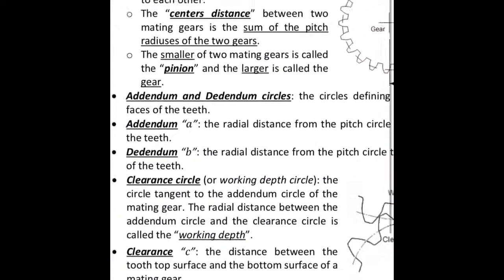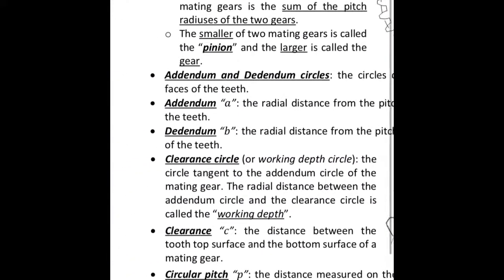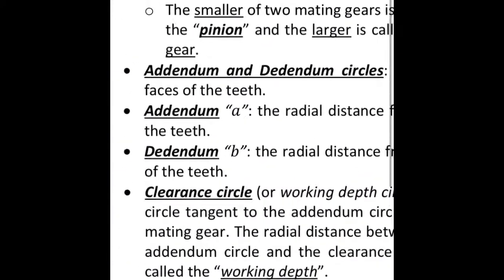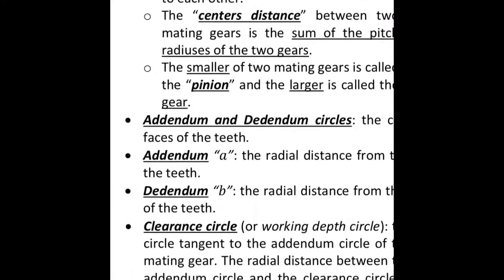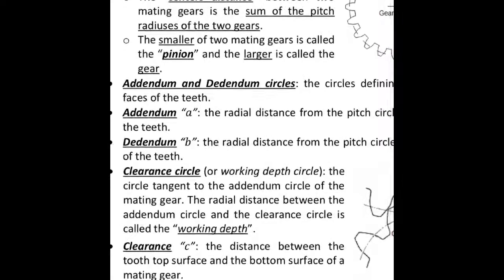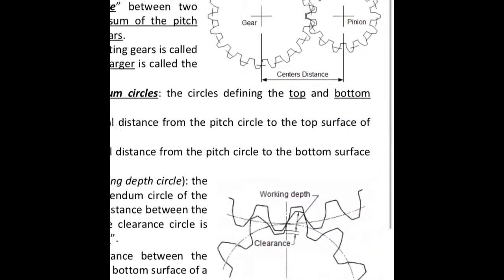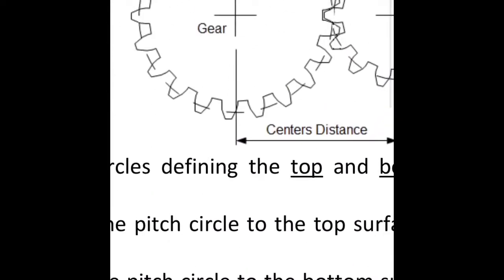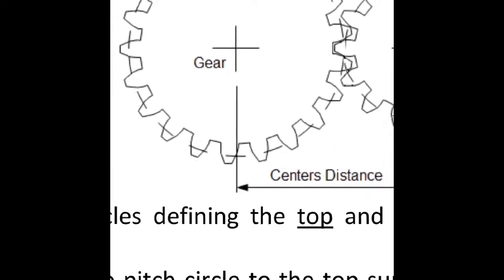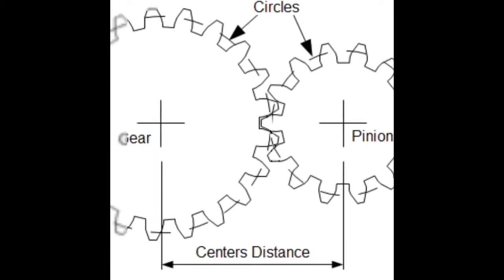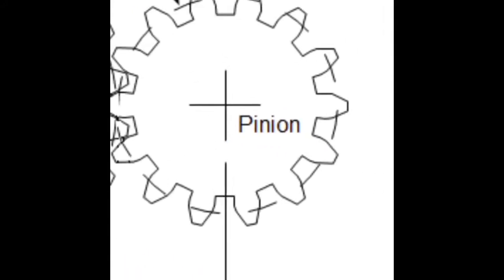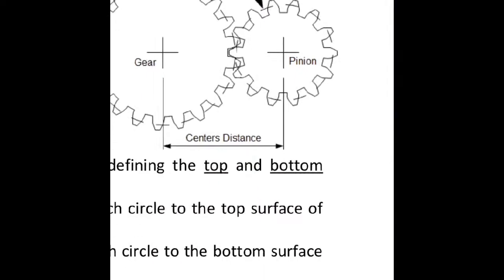Helical gears: the teeth are inclined with respect to the axis of rotation. They are more suitable for transmitting motion at higher speeds due to the more gradual engagement of teeth during meshing, making them less noisy than spur gears. In some cases, helical gears can also be used to transmit rotation between perpendicular shafts.